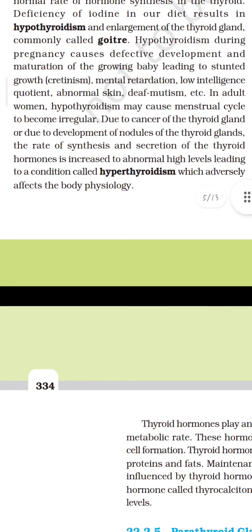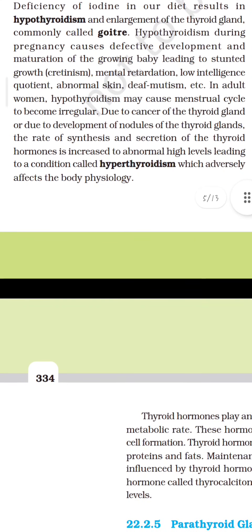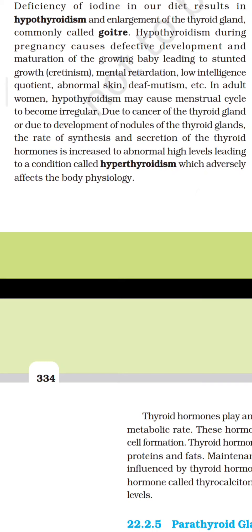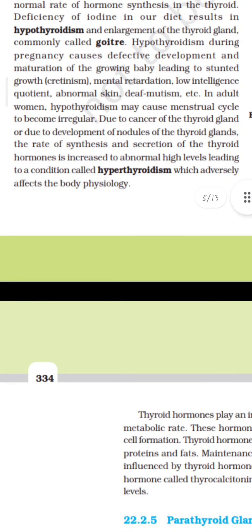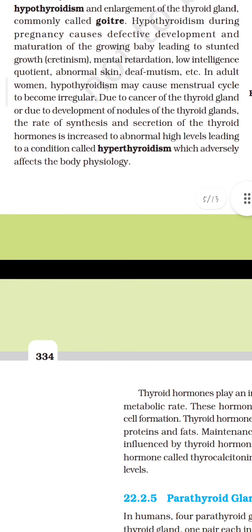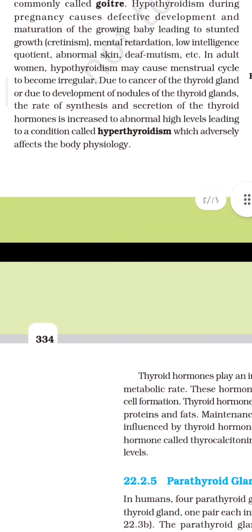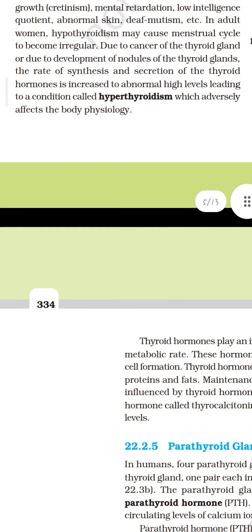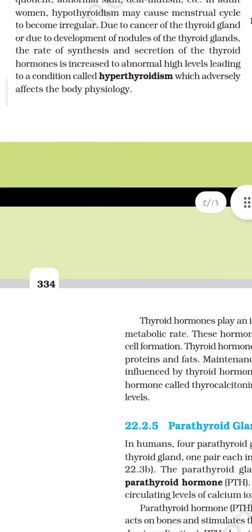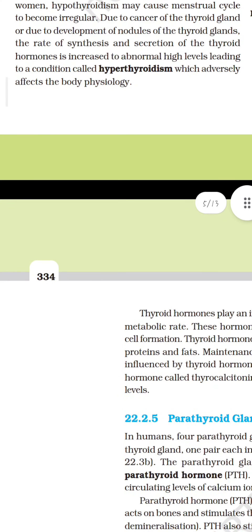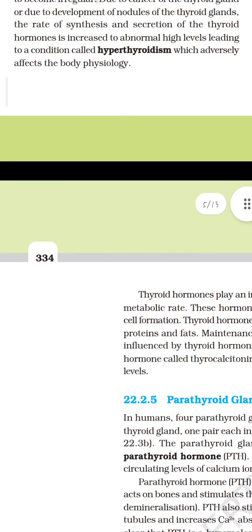Hypothyroidism during pregnancy causes defective development and maturation of the growing baby leading to stunted growth (cretinism), mental retardation, low intelligence quotient, abnormal skin, deafness (mutism), etc. In adult women, hypothyroidism may cause the menstrual cycle to become irregular. Due to cancer of the thyroid gland or development of nodules of the thyroid gland, the rate of synthesis and secretion of thyroid hormones may increase to abnormal high levels leading to a condition called hyperthyroidism, which adversely affects the body physiology.